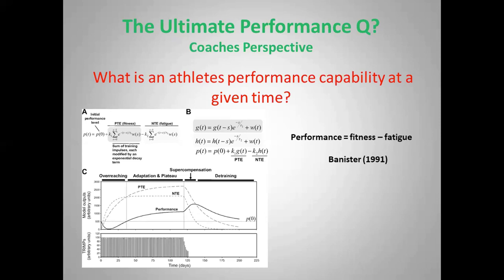You can see some of the systems modeling that has probably given rise to this sort of approach, from the likes of Banister. The formula is fairly simple: performance at any given time is a result of the fitness someone has minus the fatigue they're displaying at the time. These are the two components we'd really want to understand the dose-response relationships for — what does the dose mean for fitness, and what does it mean for fatigue? For today's presentation I'll only be focusing on the fitness component.